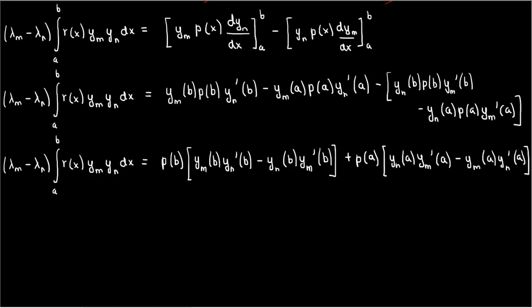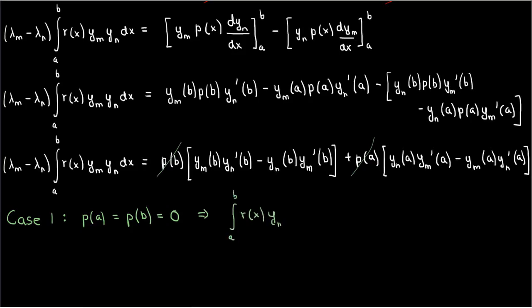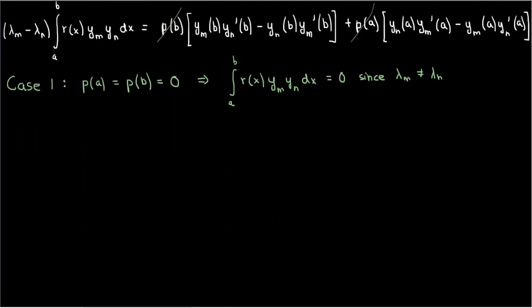This is the point in the proof where we're done with all the algebra, and now we just have to show that the orthogonality relation applies using what was given to us. I'll break things up into two cases. In case one, I'll assume that p(x) is zero at x equals a and x equals b. If this is true, then the right-hand side automatically becomes zero because of the p(b) and p(a) terms, and since lambda_m and lambda_n aren't equal to each other, it follows that the integral from a to b of r(x) times y_m times y_n dx is zero, and the proof is complete. If case one applies, you won't even need boundary conditions — you'll have orthogonality automatically because of the nature of p(x) in the Sturm-Liouville equation.